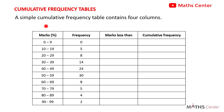In a simple cumulative frequency table we will have the marks, the frequencies, the marks less than, and the cumulative frequency. The marks and frequencies will usually be given to us, so we will have to fill the marks less than and cumulative frequency columns ourselves. Let's start with the marks less than — how do we find that?